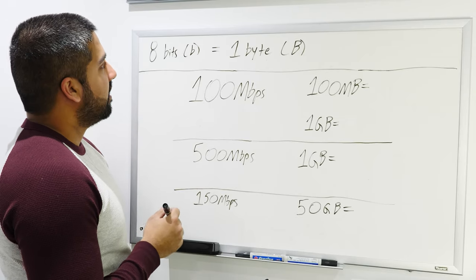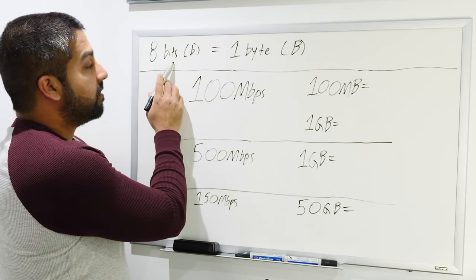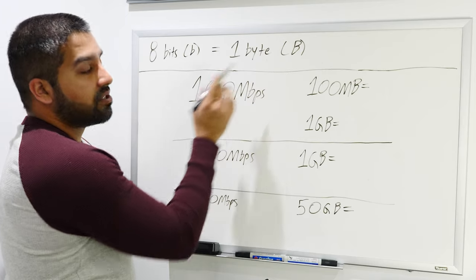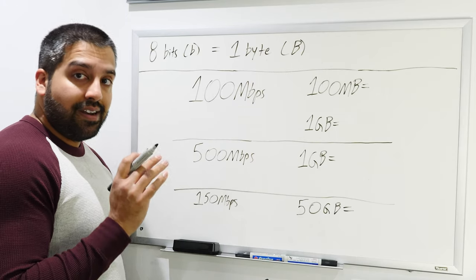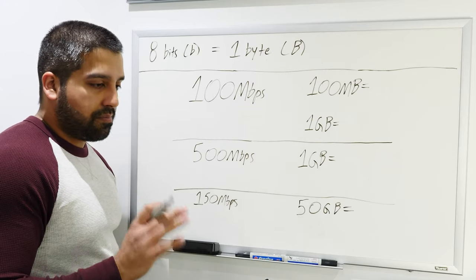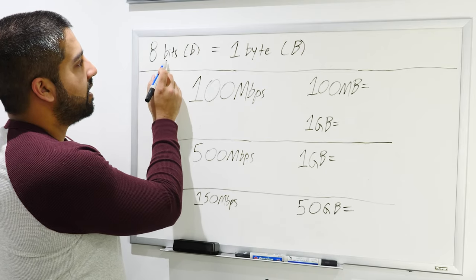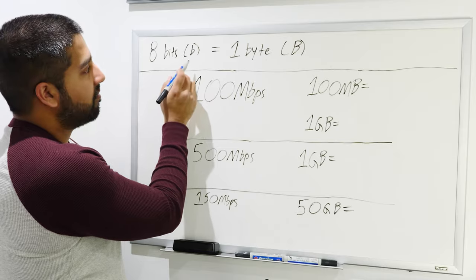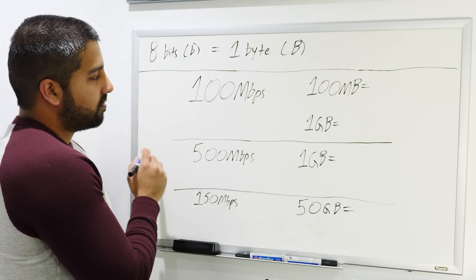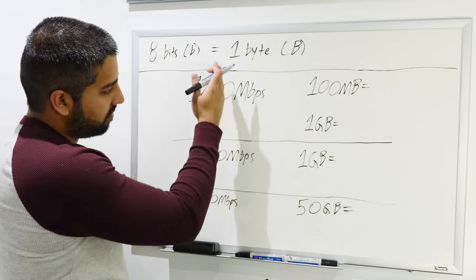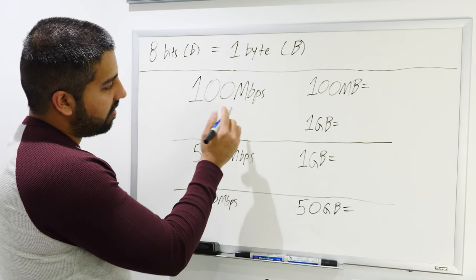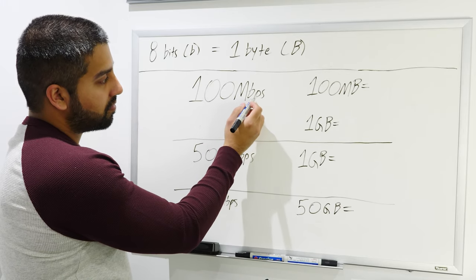The most important thing to know, and this is where all the confusion happens, is this top line right here. This is the most important thing in the entire video you're watching, and that is the difference between bits and bytes. So let's talk with networking first. Networking speeds, upload, download, doesn't matter, regardless, is always a reference in bits, and bits is always written down with the lowercase b.